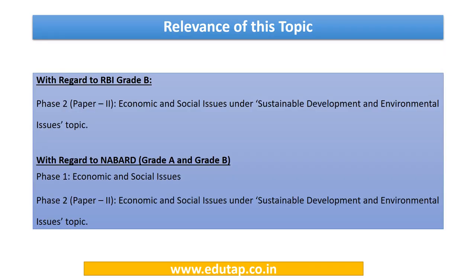The relevance of this topic with regard to RBI Grade B will be in Phase 2, Paper 2, Economic and Social Issues under Sustainable Development and Environmental Issues. With regard to NABARD, Grade A and Grade B will be in Phase 1, Economic and Social Issues, and Phase 2, Paper 2, Economic and Social Issues under Sustainable Development and Environmental Issues.